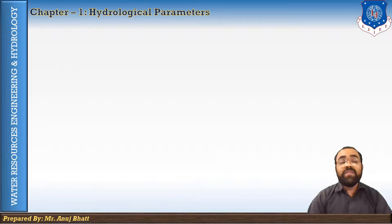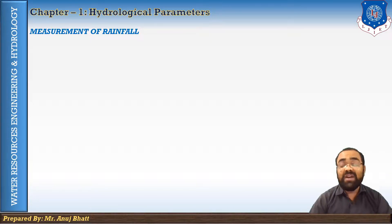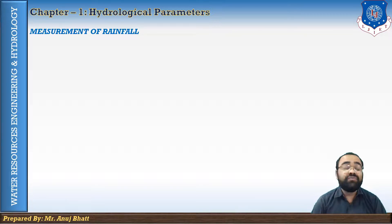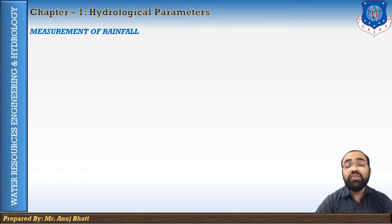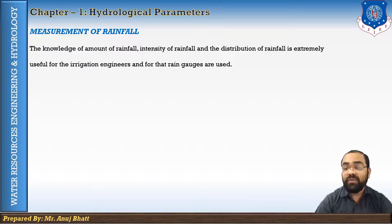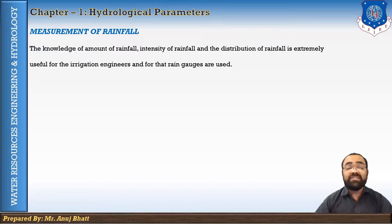Now let's discuss the measurement of rainfall — how we can measure rainfall and why we need to measure it. We all know that rainfall is the main source of water, which we use for various purposes. The knowledge of the amount of rainfall, intensity of rainfall, and distribution of rainfall is extremely useful for irrigation purposes, and this data is also useful for engineers to design irrigation systems.